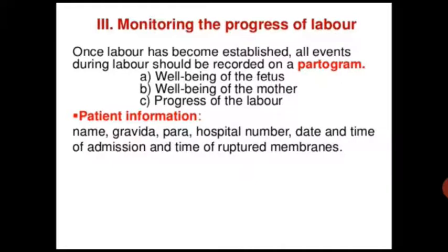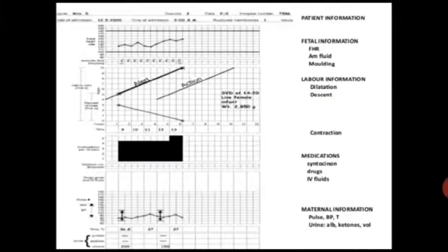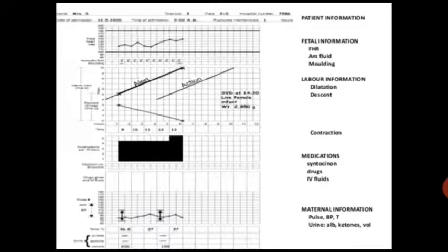The partogram includes patient information: name, gravida, para, hospital number, date, time of admission, and time of ruptured membranes. Fetal information recorded includes fetal heart rate, amniotic fluid, and molding. Labor information includes cervical dilatation and descent of the presenting part.